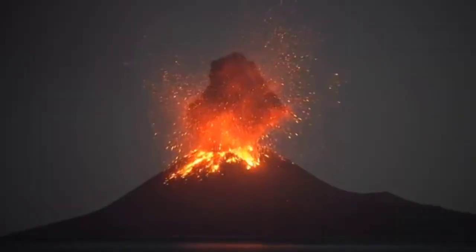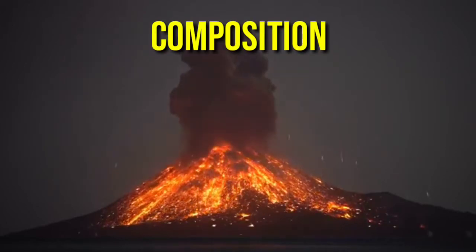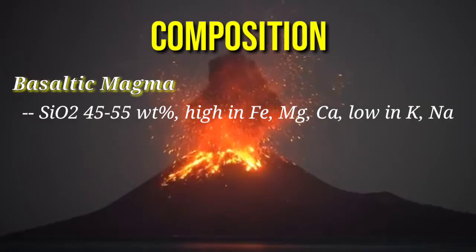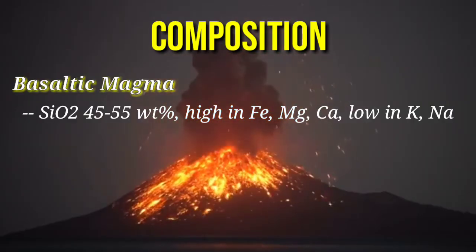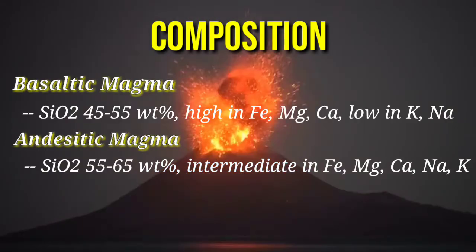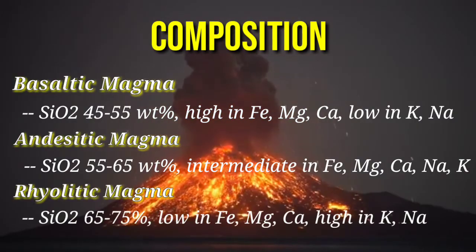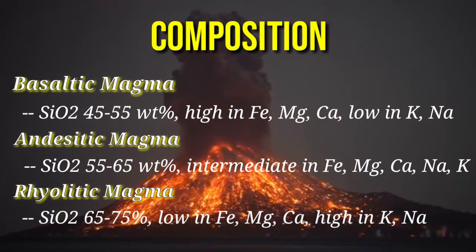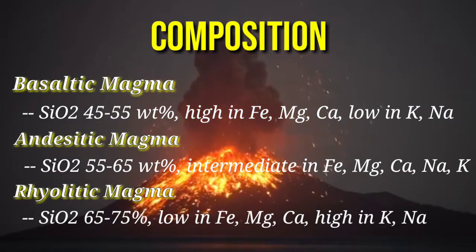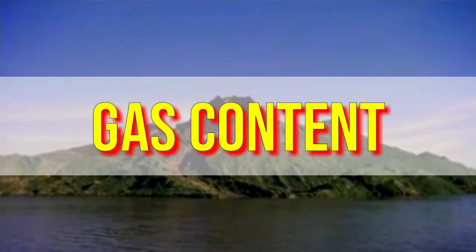The silica content of a magma determines whether it is viscous or fluid. In composition, basaltic magma is 45–55% silica, high in iron, magnesium, and calcium, and low in potassium and sodium. Andesitic magma is 55–65% silica, intermediate in iron, magnesium, calcium, sodium, and potassium. And rhyolitic magma is 65–75% silica, low in iron and magnesium, and high in potassium and sodium. A volcano's eruptive style is affected mainly by the gas content of the magma.